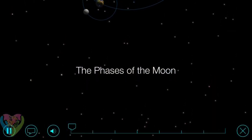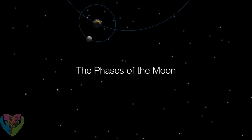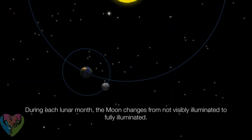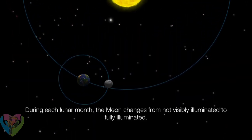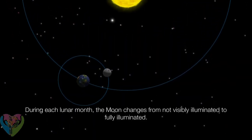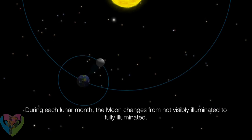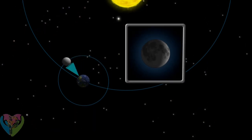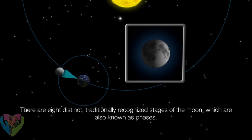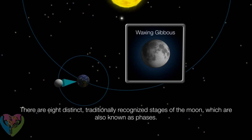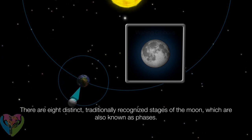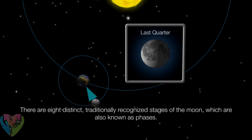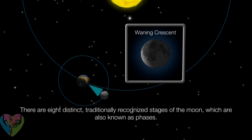The phases of the Moon. Why does the Moon look different every night? During each lunar month, the Moon changes from not being visibly illuminated to being fully illuminated. There are eight distinct, traditionally recognized stages of the Moon, which are also referred to as its phases.